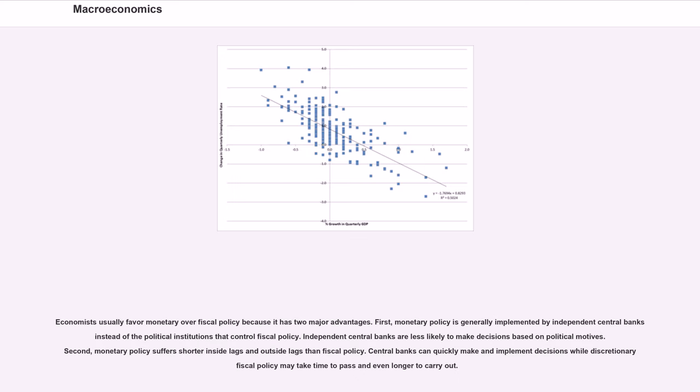Economists usually favor monetary over fiscal policy because it has two major advantages. First, monetary policy is generally implemented by independent central banks instead of the political institutions that control fiscal policy. Independent central banks are less likely to make decisions based on political motives. Second, monetary policy suffers shorter inside-lags and outside-lags than fiscal policy. Central banks can quickly make and implement decisions while discretionary fiscal policy may take time to pass and even longer to carry out.